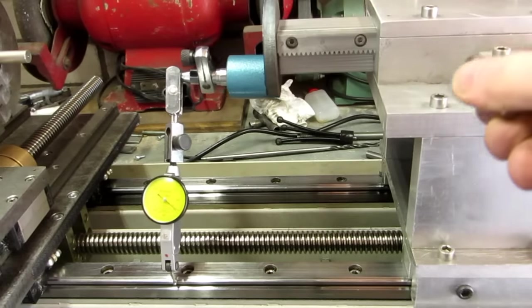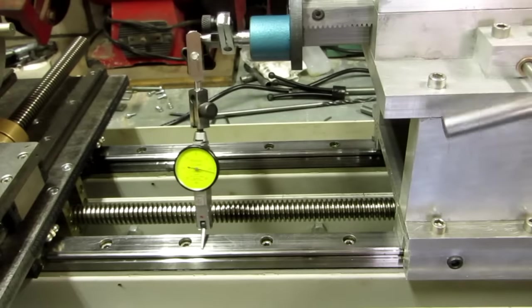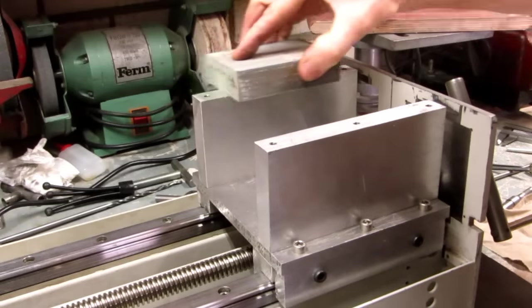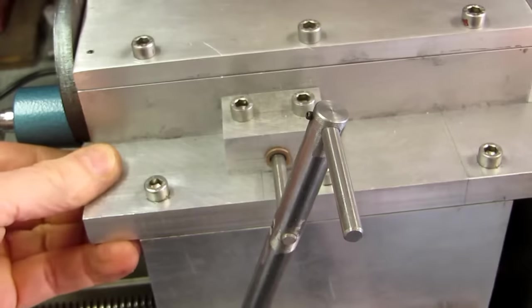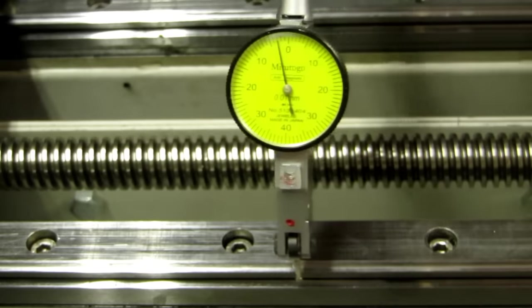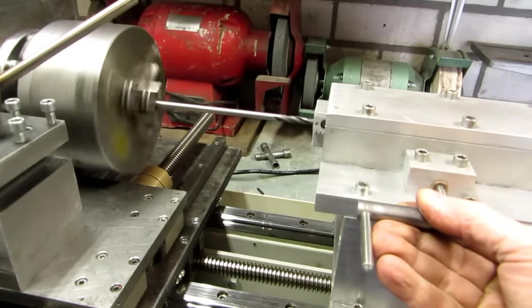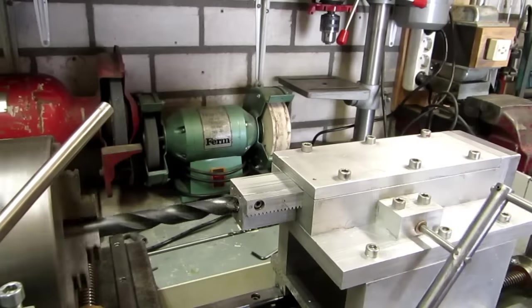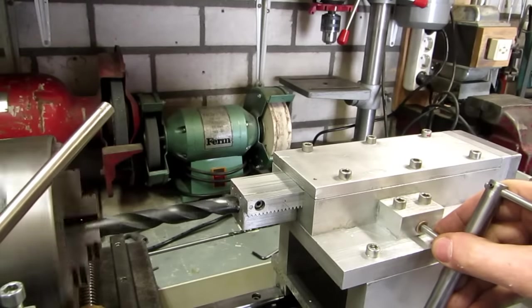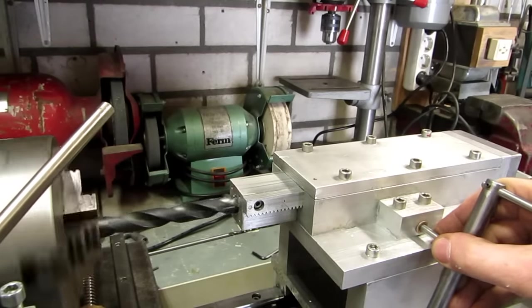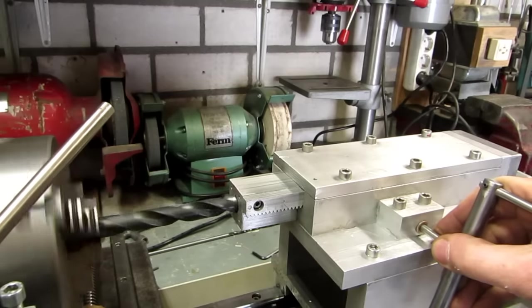First I check whether the tailstock spindle moves parallel with the chuck center line. I adjusted to make it as accurate as possible. Then I drilled an 8mm hole through the complete spindle bar and drilled a bigger hole for the chuck shaft. The holes will now precisely match the lathe chuck center line.